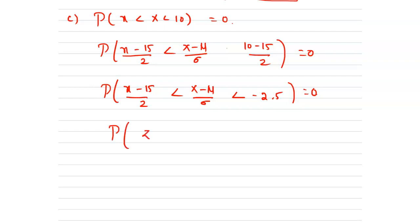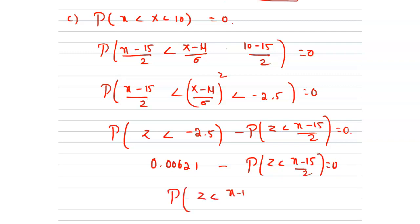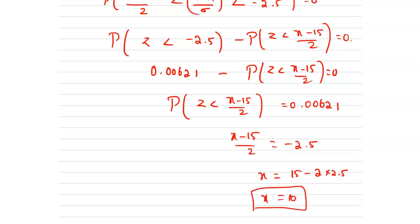We can write this as p of z less than negative 2.5 minus p of z less than (x minus 15) divided by 2 equals 0. The value from the normal table is 0.00621, so p of z less than (x minus 15) divided by 2 equals 0.00621. From this, (x minus 15) divided by 2 equals negative 2.5, so x equals 15 minus 2 times 2.5, which equals 10. Hence the value of x is 10.